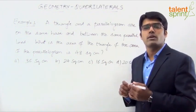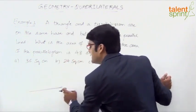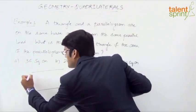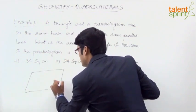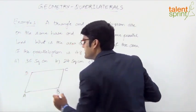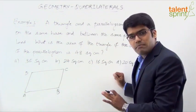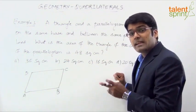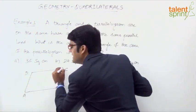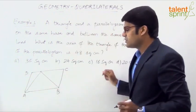Let us understand what it actually means. The triangle and the parallelogram have the same base. Let us construct a parallelogram — so this is a parallelogram, and ABCD are its vertices. AB is the base of the parallelogram. Now, the triangle must also have the same base and be between the same parallel lines. So if we take any point on side CD, we can construct a triangle.